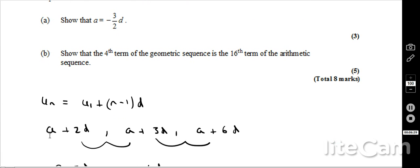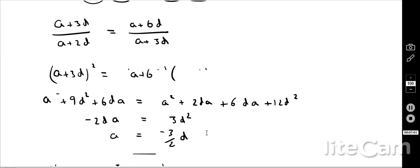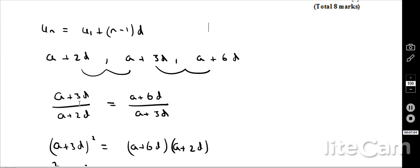And then we use that and basically say, okay, let's say that A is our first term. And so the third term of the arithmetic is A plus 2D. The fourth term of the arithmetic is A plus 3D. And the seventh term of the arithmetic is A plus 6D. Now, I use the fact that these three terms here, the A plus 2D, the A plus 3D, A plus 6D, are consecutive terms in a geometric sequence.